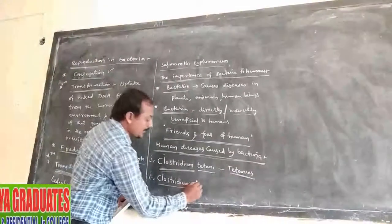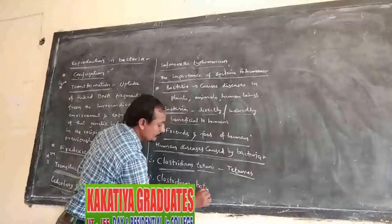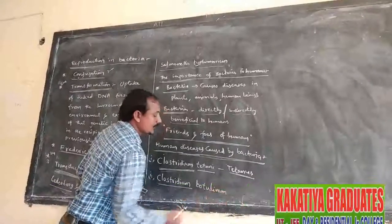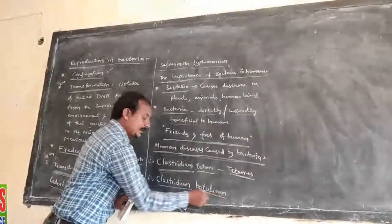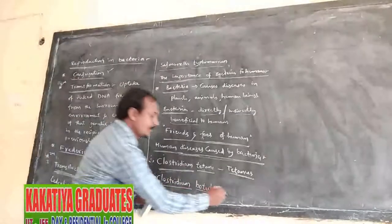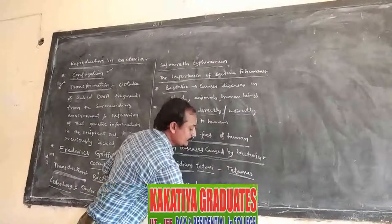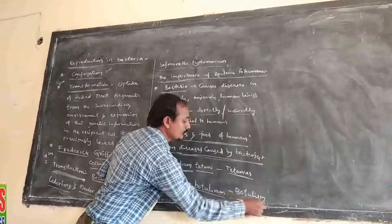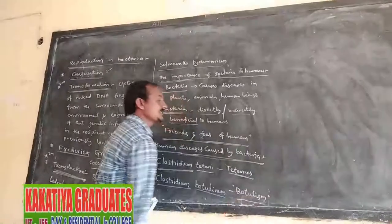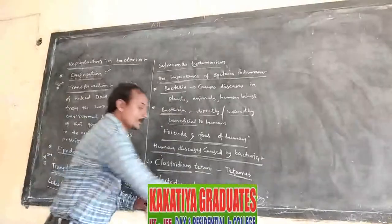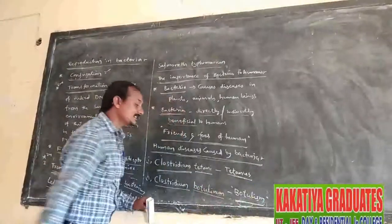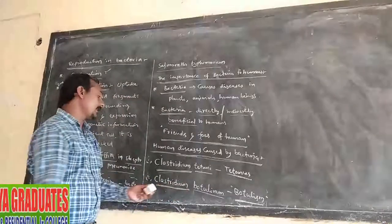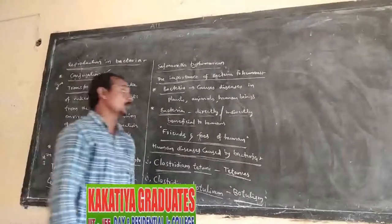Second one: Clostridium botulinum. Clostridium botulinum is another bacteria. It causes botulinum disease. It is a poisonous food disease, caused by a bacteria called Clostridium botulinum.